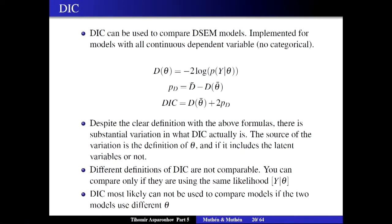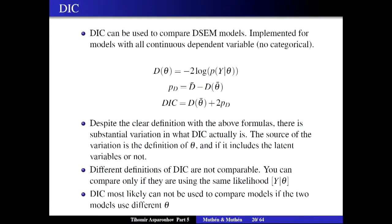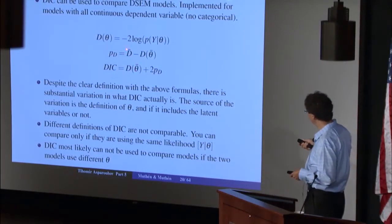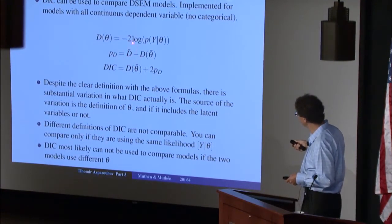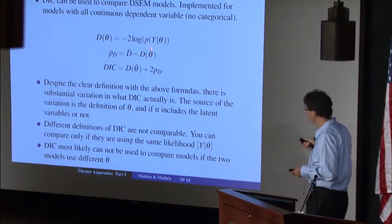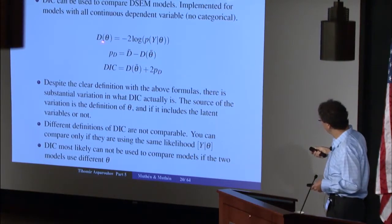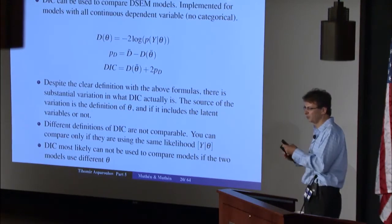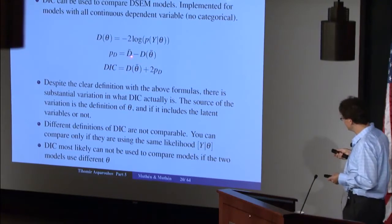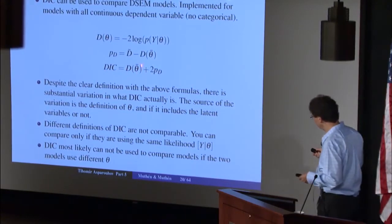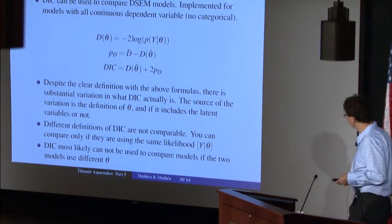The DIC criterion is based on a quantity where theta represents the unknown quantities in the model — the parameters. It's called the deviance, which is the log likelihood of the observed data conditional on these unknown quantities. PD is called the estimated number of parameters, found in the M-plus output. It's essentially the average deviance across MCMC iterations minus the deviance at the average parameter estimates. The DIC is a simple combination: the deviance of the average parameters plus two times the number of estimated parameters.